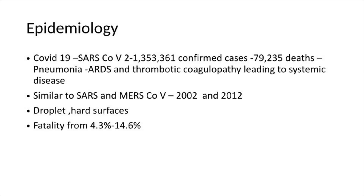COVID is due to SARS-CoV-2 virus, which we know about earlier in terms of SARS virus and MERS-CoV-2 virus in 2002 and 2012, endemic in China and Saudi Arabia. This group of viruses were transmitted quite fast with droplet infections or in terms of fomites — touching hard surfaces or objects.